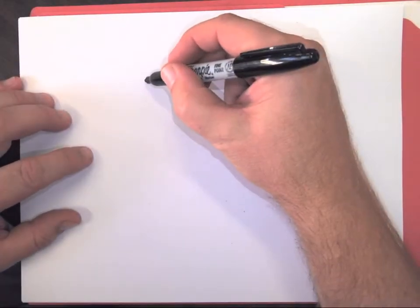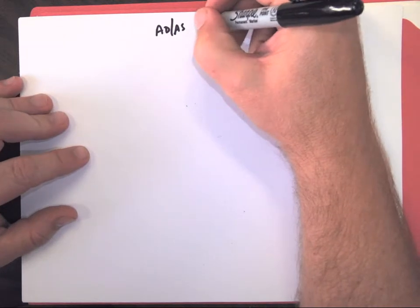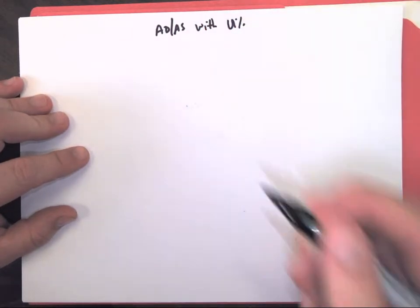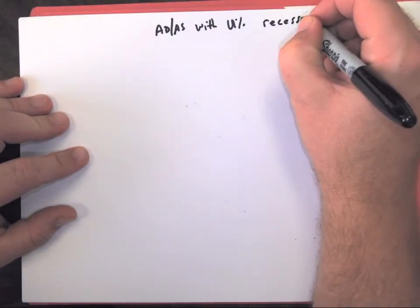Now, this is going to be an economy, our aggregate demand, aggregate supply, with unemployment. Anytime we have unemployment, it's also a recession.